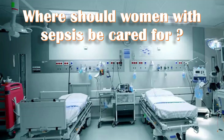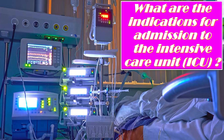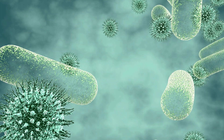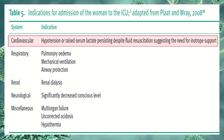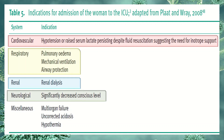Women with sepsis in the puerperium are best managed in hospital where diagnostic services are easy to access and intensive care facilities are readily available — early referral to hospital may be life-saving. Indications for ICU admission include cardiovascular indications such as hypotension or raised serum lactate persisting despite fluid resuscitation; respiratory indications including pulmonary edema, mechanical ventilation, or airway protection; renal indications such as renal dialysis; neurological indications including significantly decreased conscious level; and miscellaneous indications such as multi-organ failure, uncorrected acidosis, and hypothermia.